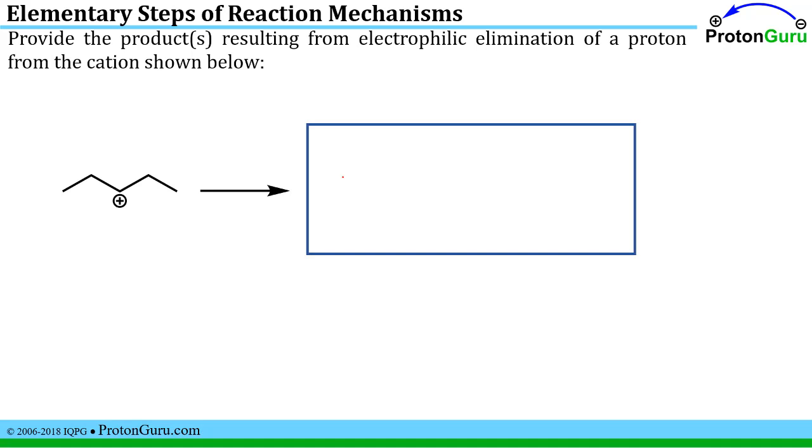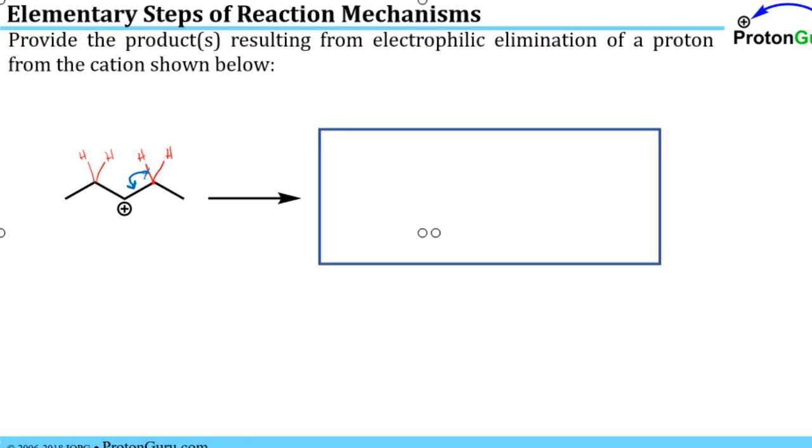Now we're asked to show the product of electrophilic elimination of a proton from this cation. The elimination of an electrophile has to take place from a site adjacent to an existing carbocation there. So if we take a look at the protons that are on sites adjacent to that, we have four H's. But this molecule is symmetric about this line, so it doesn't really matter from which side we choose to take that proton. So I'm just going to take these electrons and make this pi bond. Elimination reactions are good at making pi bonds. If we do that, we've broken that off and the H will not be attached anymore.